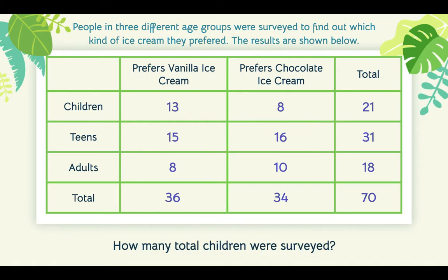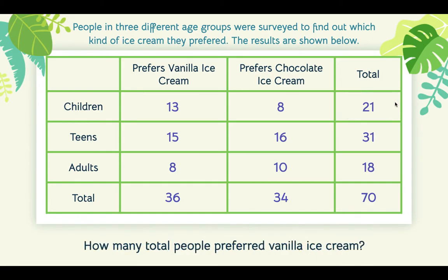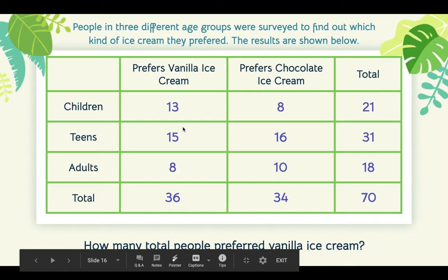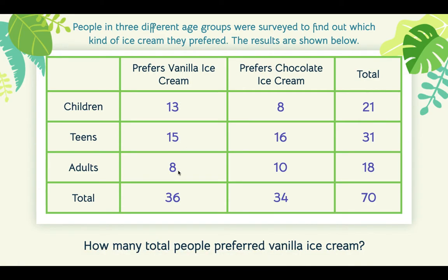How many total children were surveyed? We look at children only — we add 13 and 8, which is 21. How many total people preferred vanilla ice cream? That includes children, teens, and adults. We find the vanilla total — 36. We're adding 13 plus 15 plus 8 equals 36.